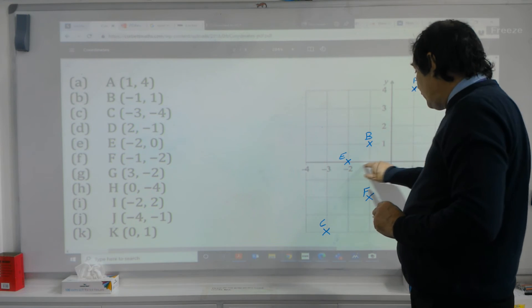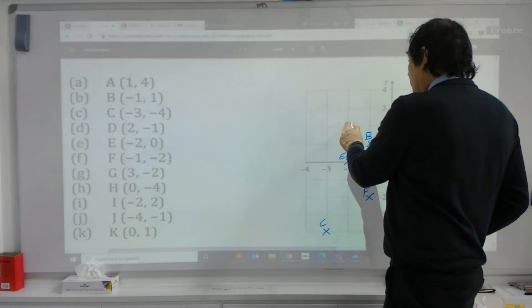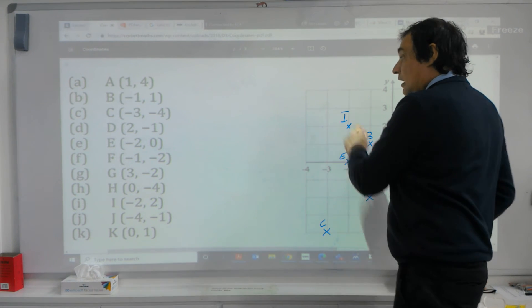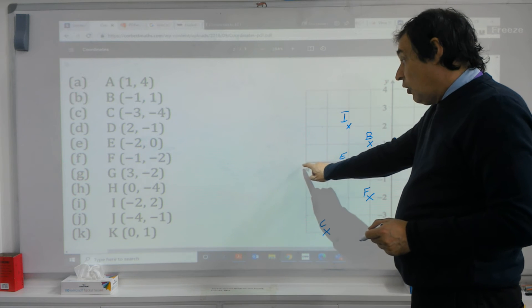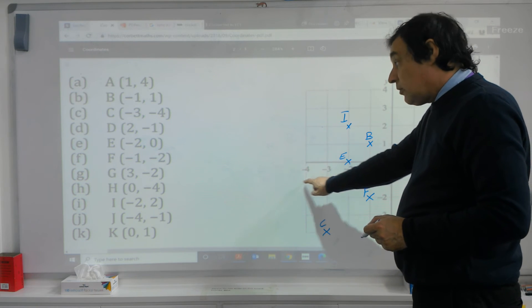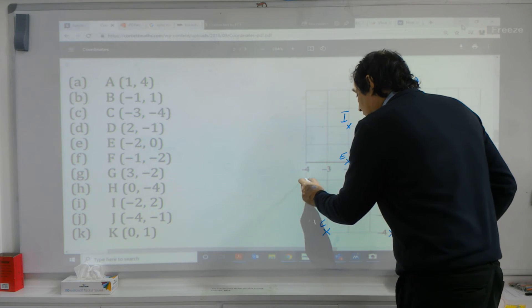I minus two and then up two, so that's going to be I. Almost there. Now J minus four and down one minus one, that's J.